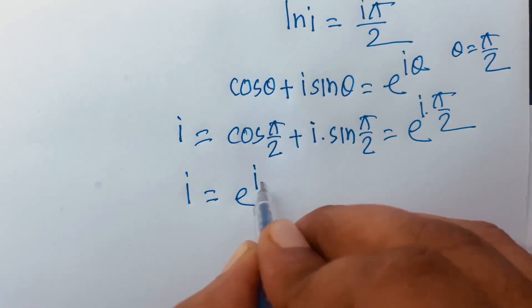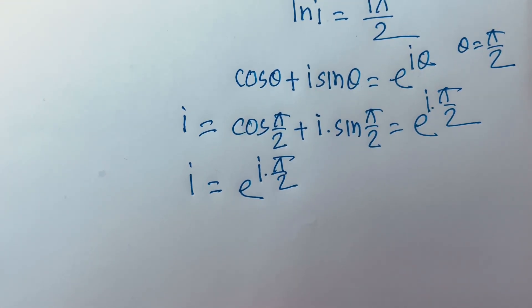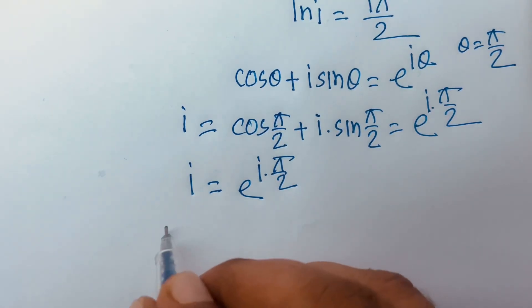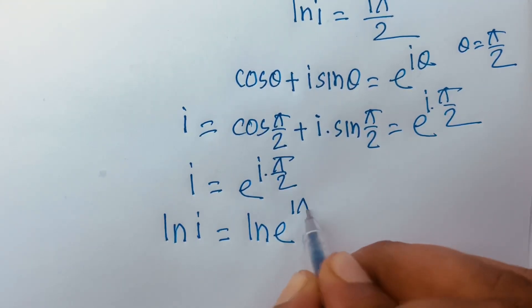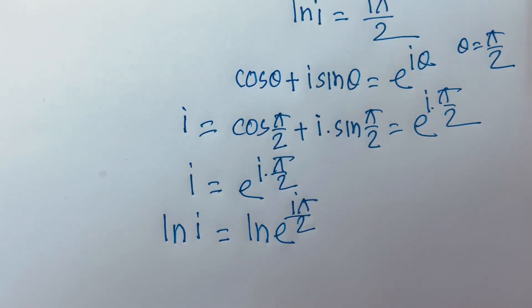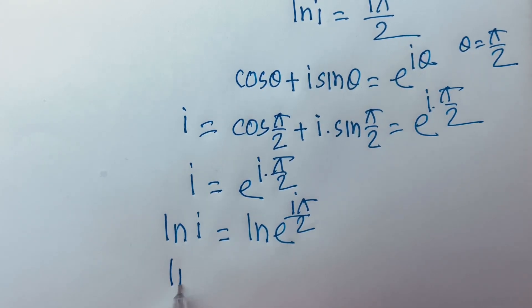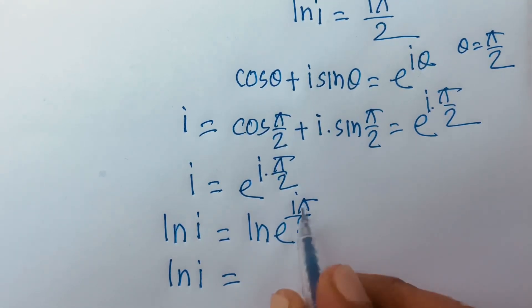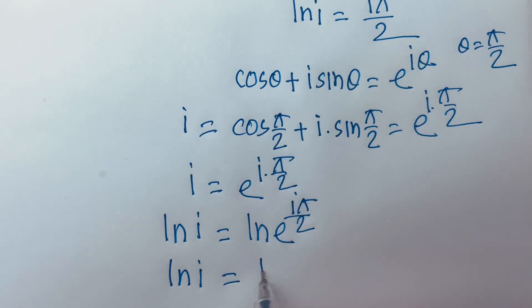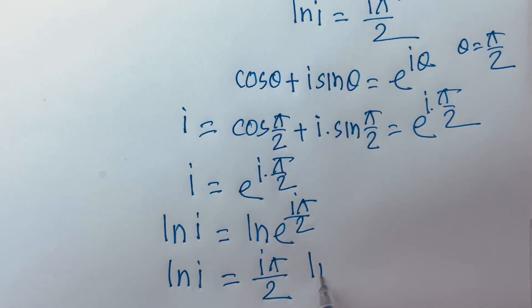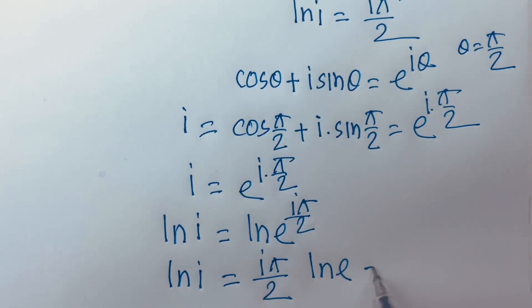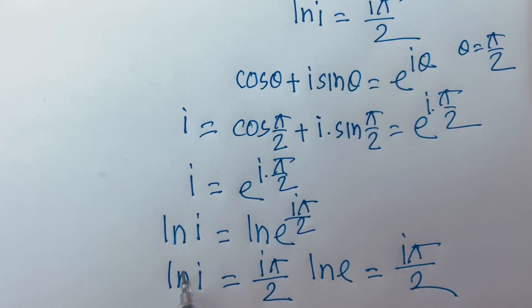Taking ln of both sides: ln i is equal to ln of e to the power i pi over 2. Moving the exponent to the front, it becomes i pi over 2 times ln e. Since ln e equals 1, we confirm that ln i is equal to i pi over 2.